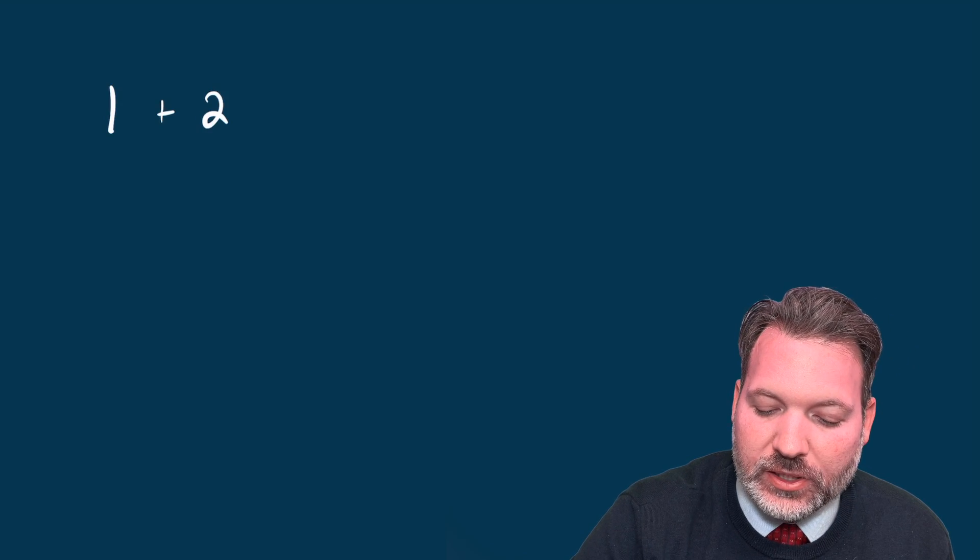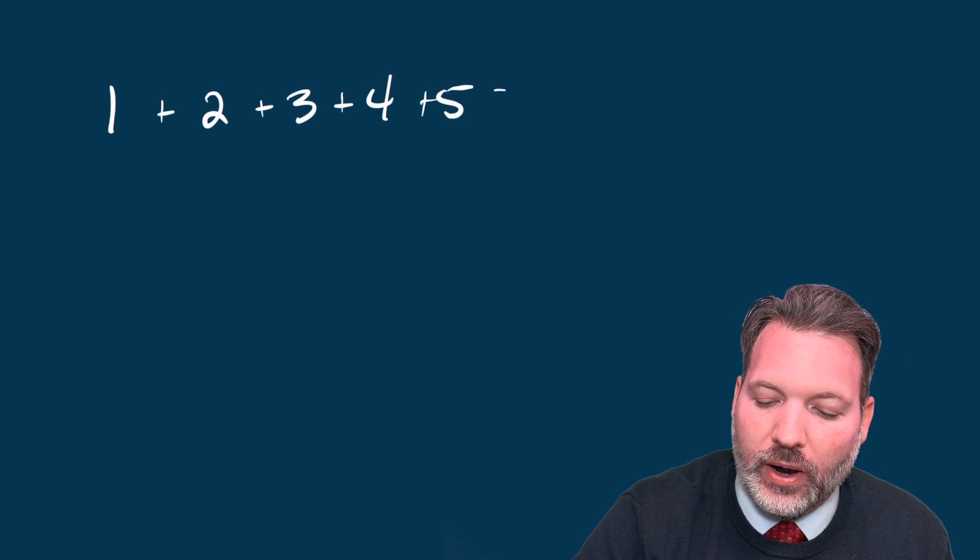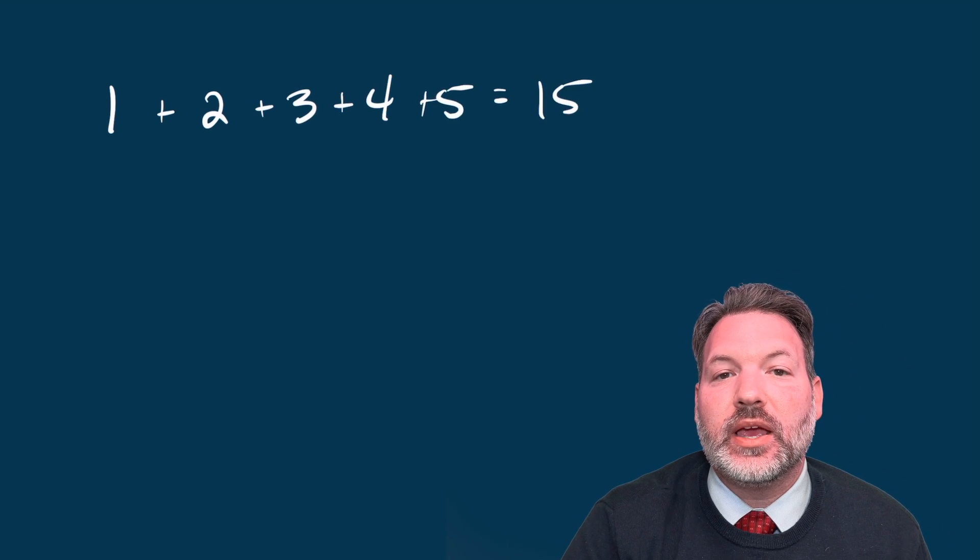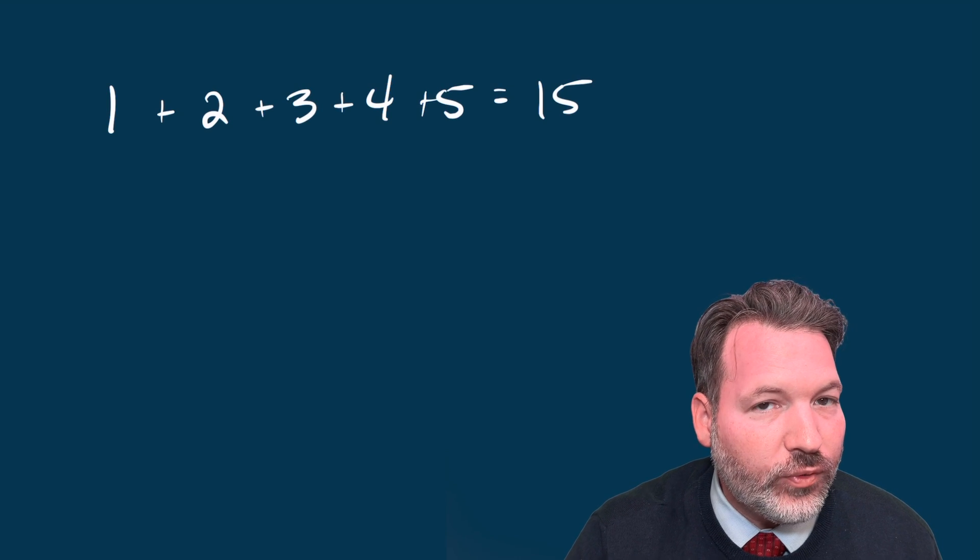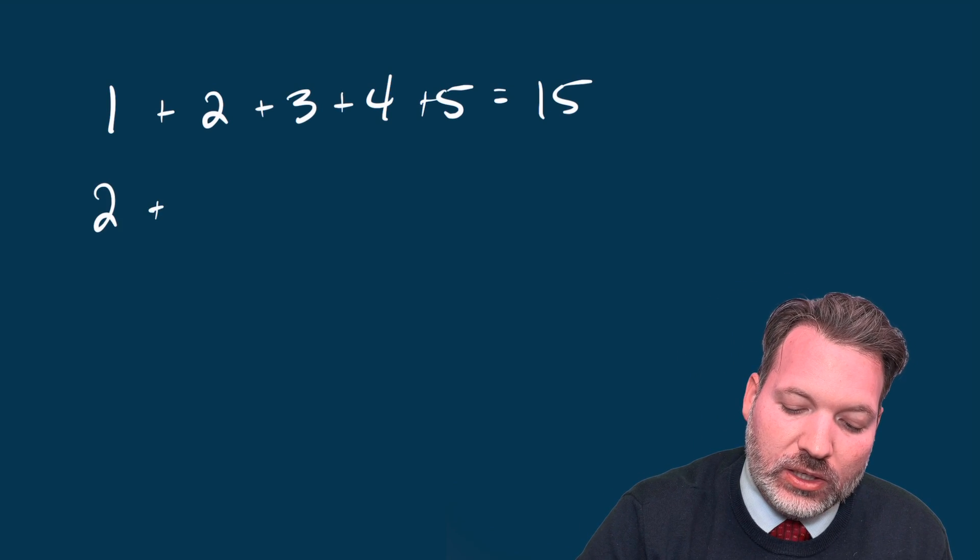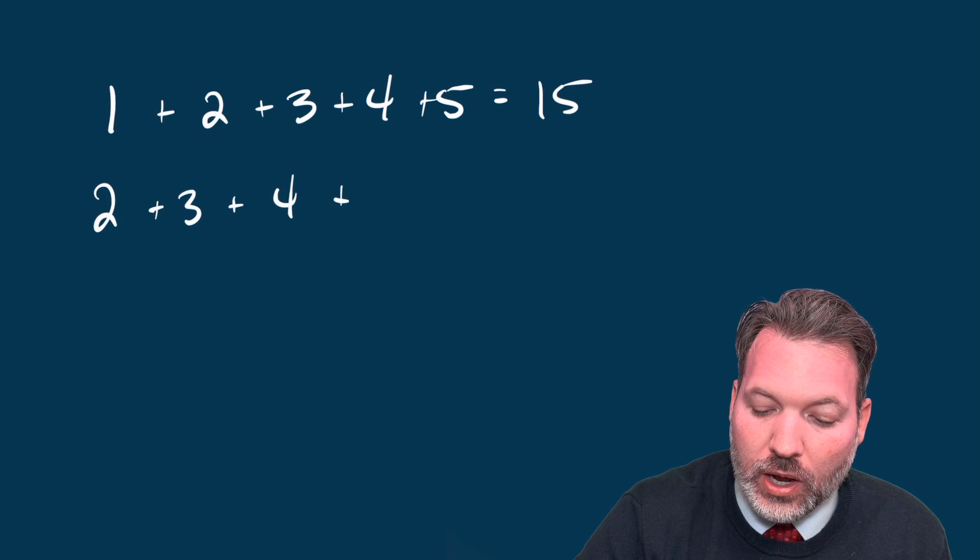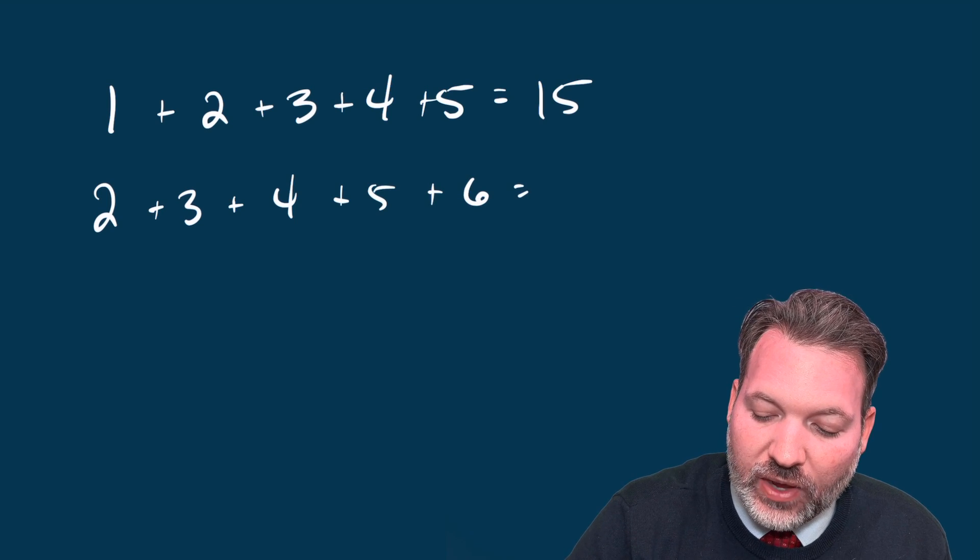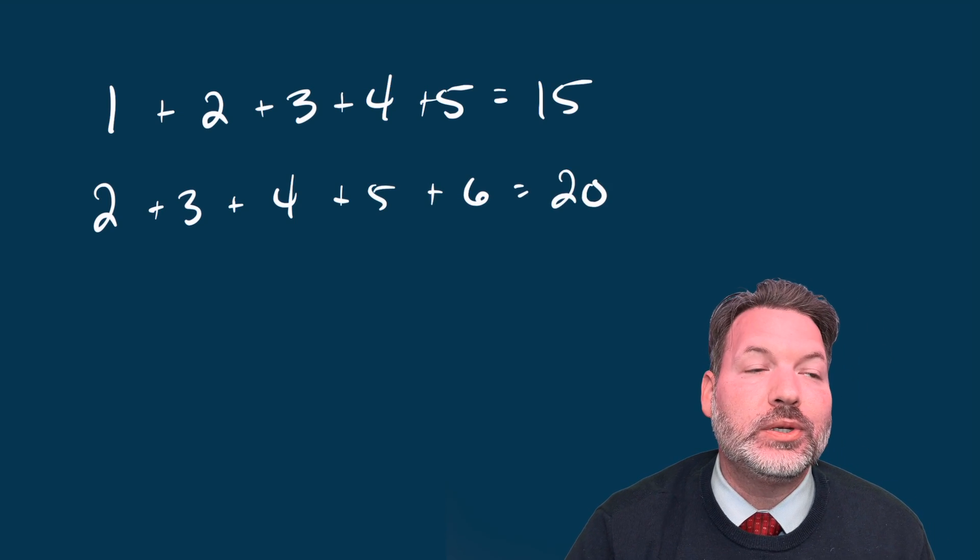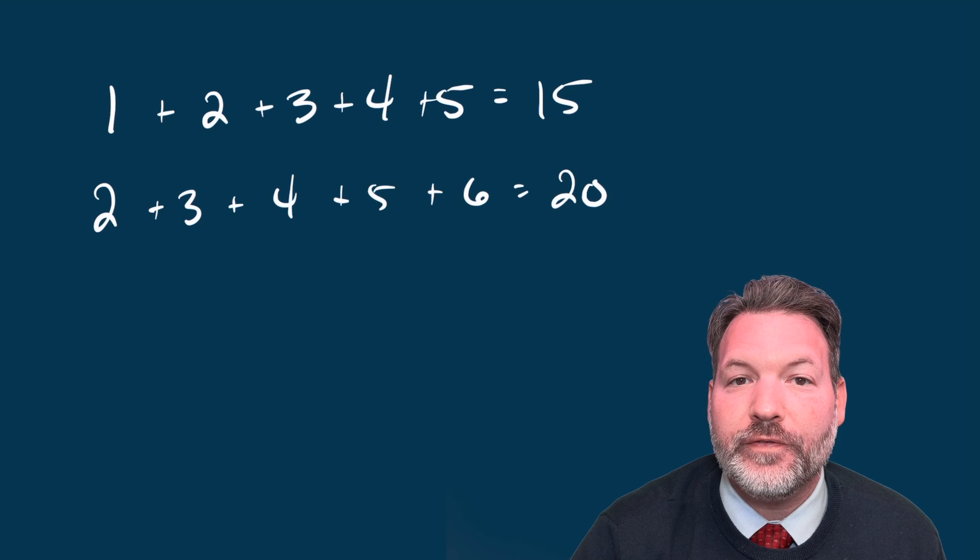Consider a simple example like five consecutive integers. Pick any five consecutive integers you want. You are guaranteed to get a sum that's a multiple of five. So of course, let's imagine we just stick with one, two, three, four, and five. When we add those together, we get 15. But even if we changed it up slightly, if we added two, three, four, five, and six, instead of getting 15, we would get 20, but 20 is still a multiple of five.